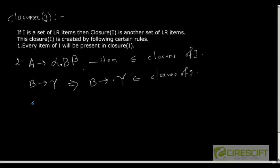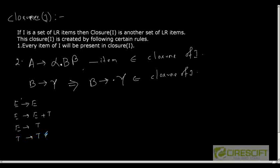So with this let us now try to see a small example. Suppose I have a small grammar: E dash as E, then E as E plus T, then E as simply T, then T as T into F, then T as F, then F as E, and also F as id.